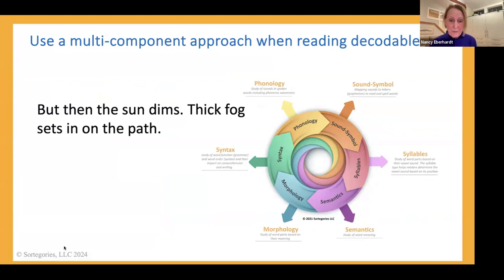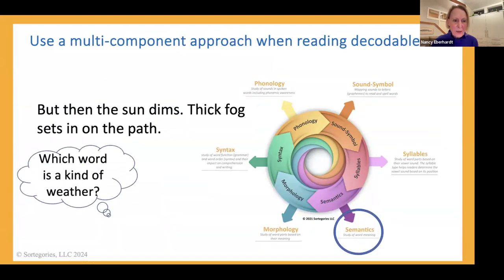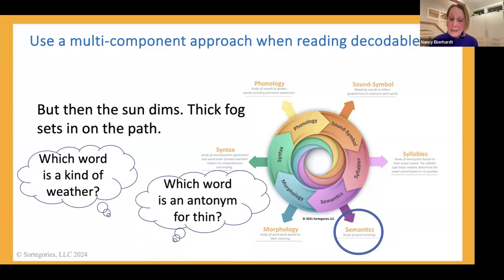So I could be asking in this activity after reading, 'But then the sun dims, thick fog sets in on the path.' We could ask, which word is a kind of weather, that kind of semantic categorization? And hopefully you're thinking the answer would be 'fog,' and we'd want them to read that or point to that word. Which word is an antonym for 'thin?' So now we're thinking of a word relationship. And again, we'd hope they would come up with the word 'thick.' But we can use this text and go beyond just reading the words accurately to doing some work on semantics.